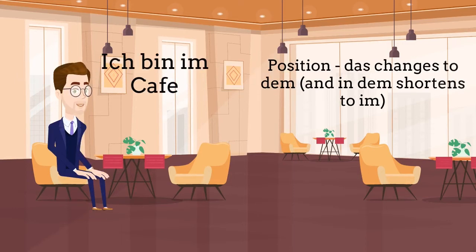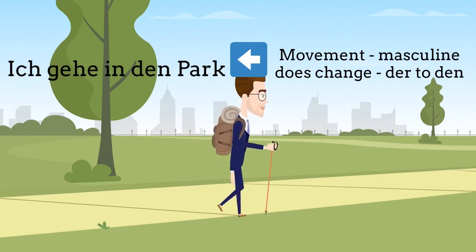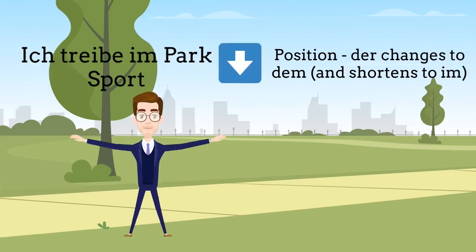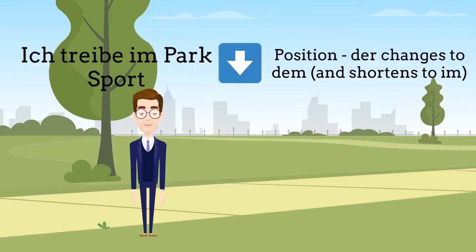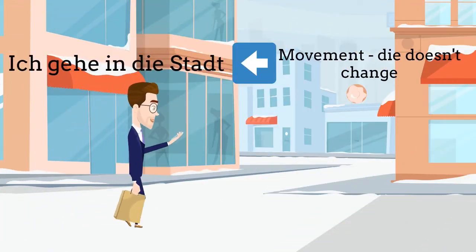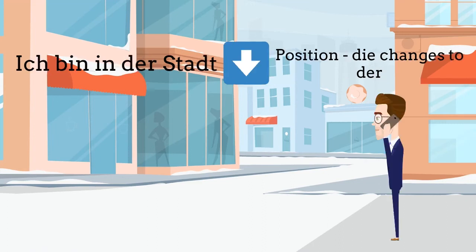Ich bin im Kaffee — position — so das Kaffee changes to in dem Kaffee, oder im Kaffee. Ich gehe in den Park — there's movement, but it's masculine, so this one changes to in den. Ich treibe im Park Sport — der changes to dem, and shortens to im. Ich gehe in die Stadt — there's movement, so die stays the same. Ich bin in der Stadt — this is position, so die changes to der.